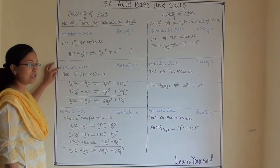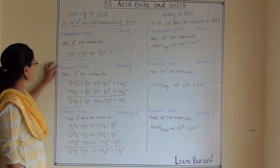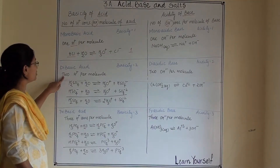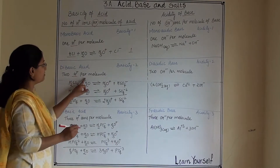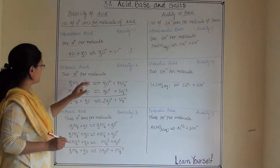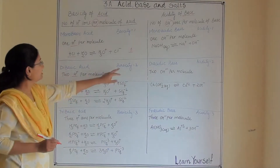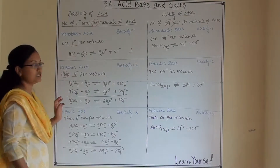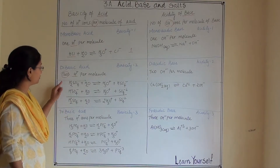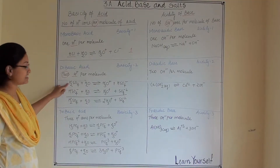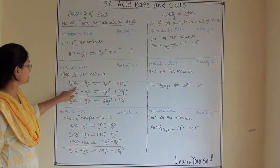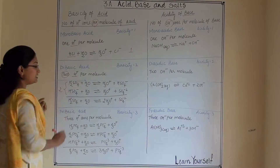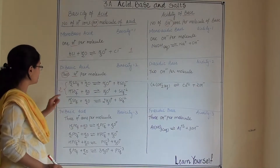Now dibasic acid gives two H+ per molecule, so the basicity is two. The example is sulfuric acid, H2SO4. It dissociates in two steps — it requires two steps to dissociate.